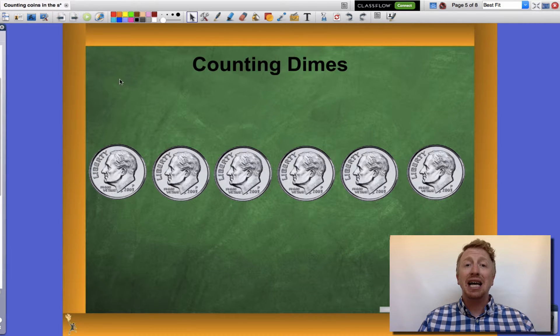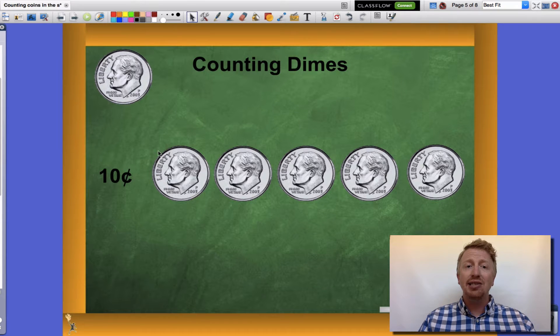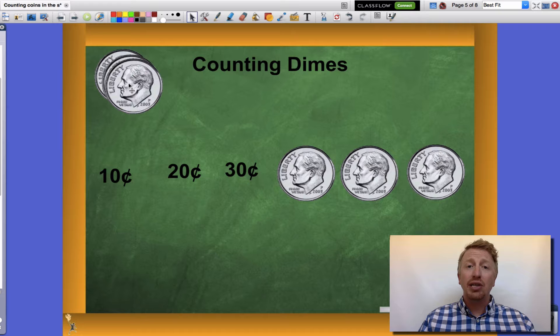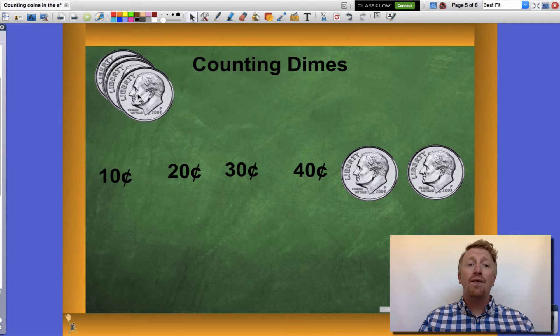Let's now look at dimes. Dimes are worth ten cents apiece. So I'm going to count by tens in order to count a group of dimes. Ten cents, twenty cents, thirty cents, forty cents,